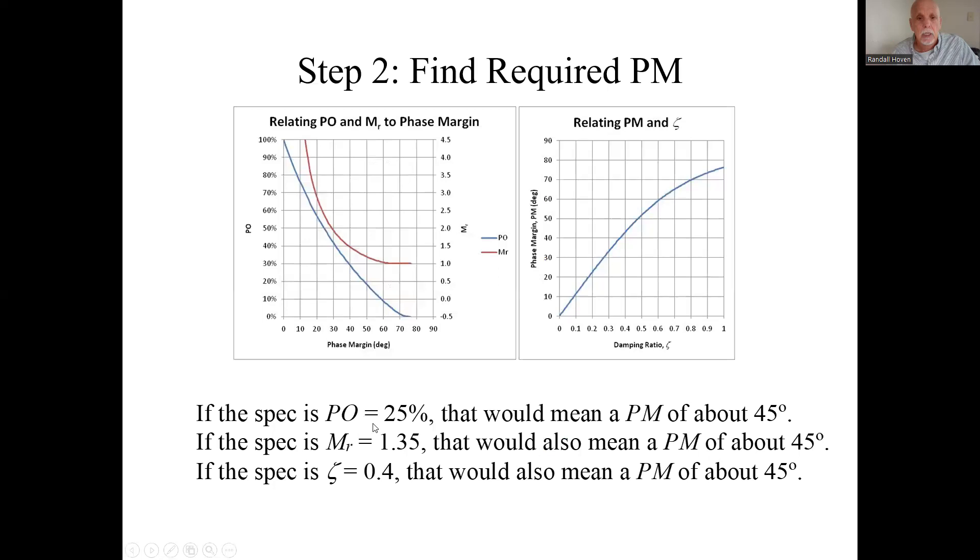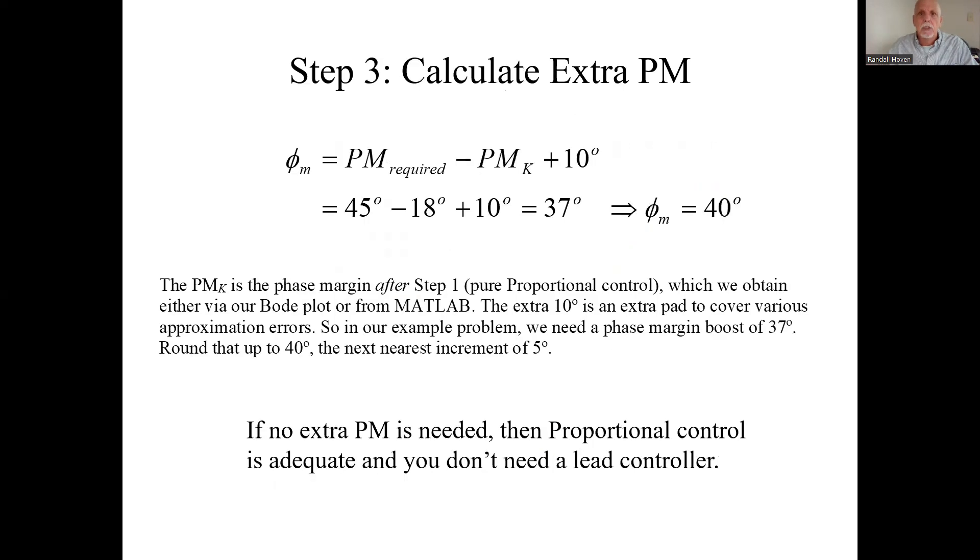The phase margin spec could have come from other performance specs like a resonant peak spec or an effective damping ratio based on a prototype second order system. We might do another example where we use those specs, but for now we need a phase margin of 45 degrees.